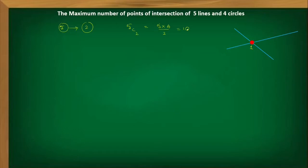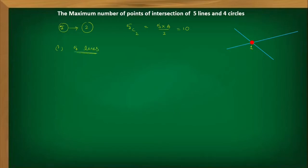Each pair gives one point of intersection. We have 10 pairs, so with the help of five lines, how many points of intersection can be formed? There are 10 pairs and each pair gives one point, so there are totally 10 points of intersection.